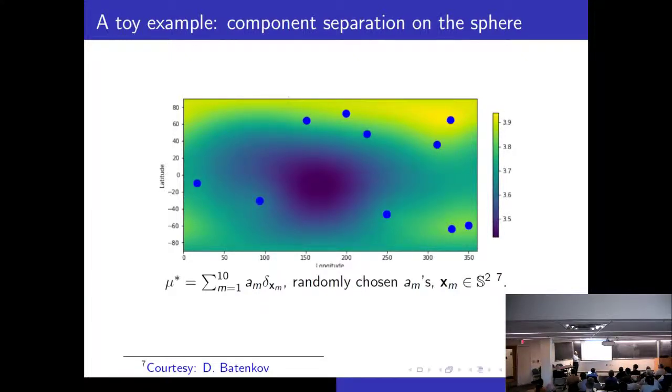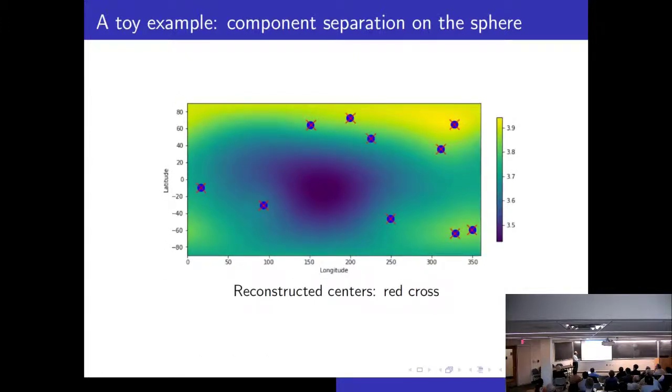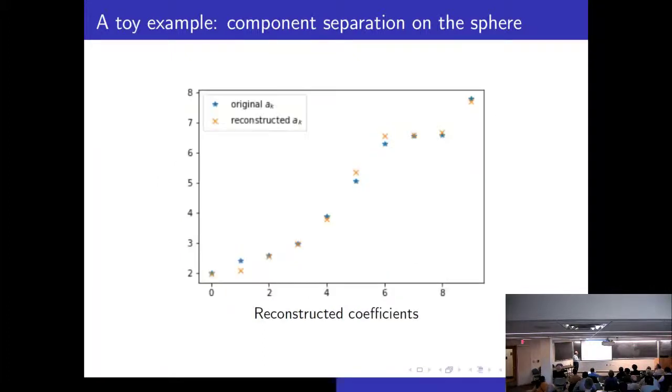And then I asked Dr. Batenkov to try a toy example for me. So we took 10 random points on the sphere. This is in the latitude longitude graph. And then this was the measure which we are trying to detect given Fourier moments with respect to the spherical harmonics. And this is the result which I got using this localized kernel. So you see that the locations are more or less exactly detected. And then the coefficients were also approximately detected but not so well. So we are still working on such problems on how to improve upon this part here.